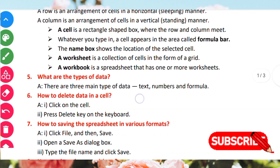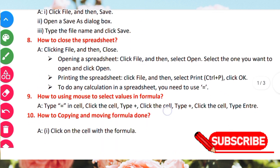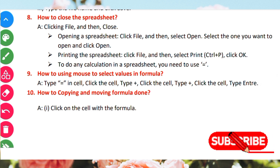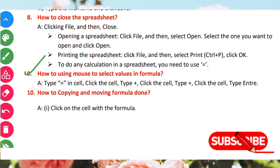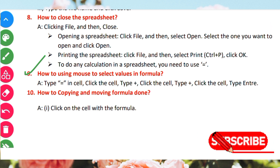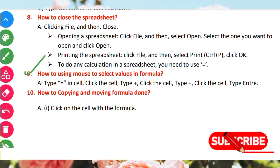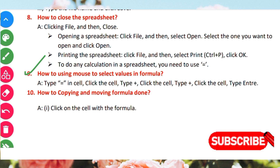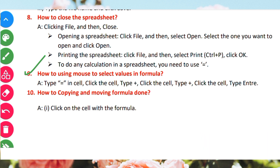Today we are starting from number 9. We are beginning with number 9 — how to use the mouse to select cells in a formula. If we want to select a formula, we need to use the mouse to enter the formula.